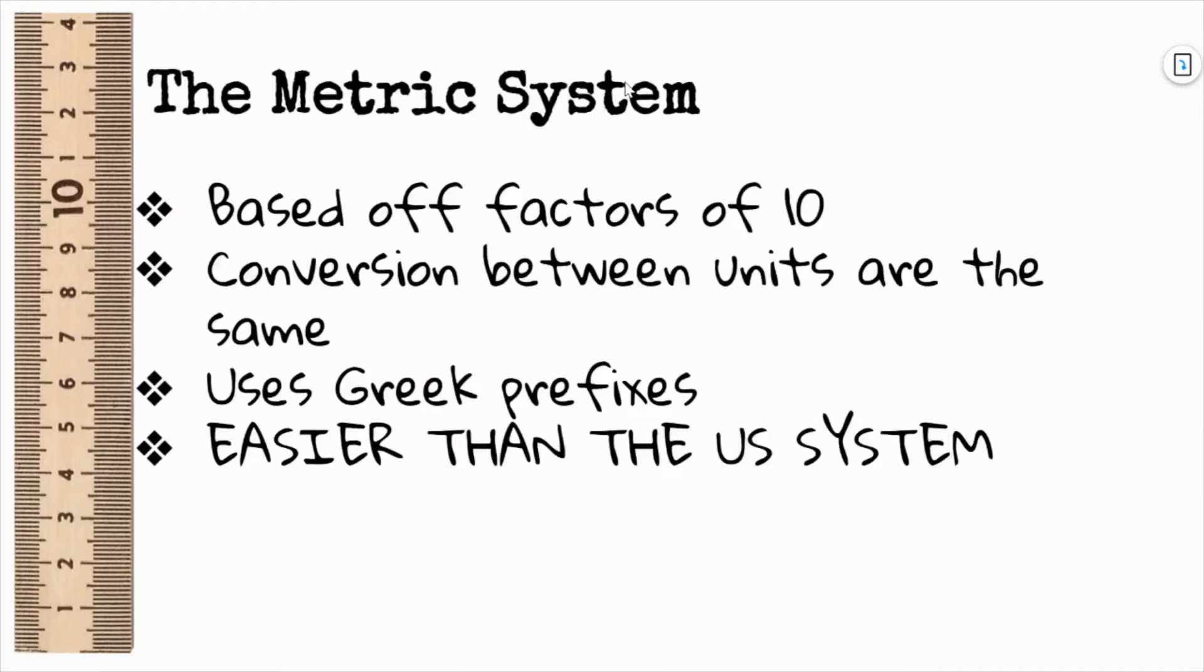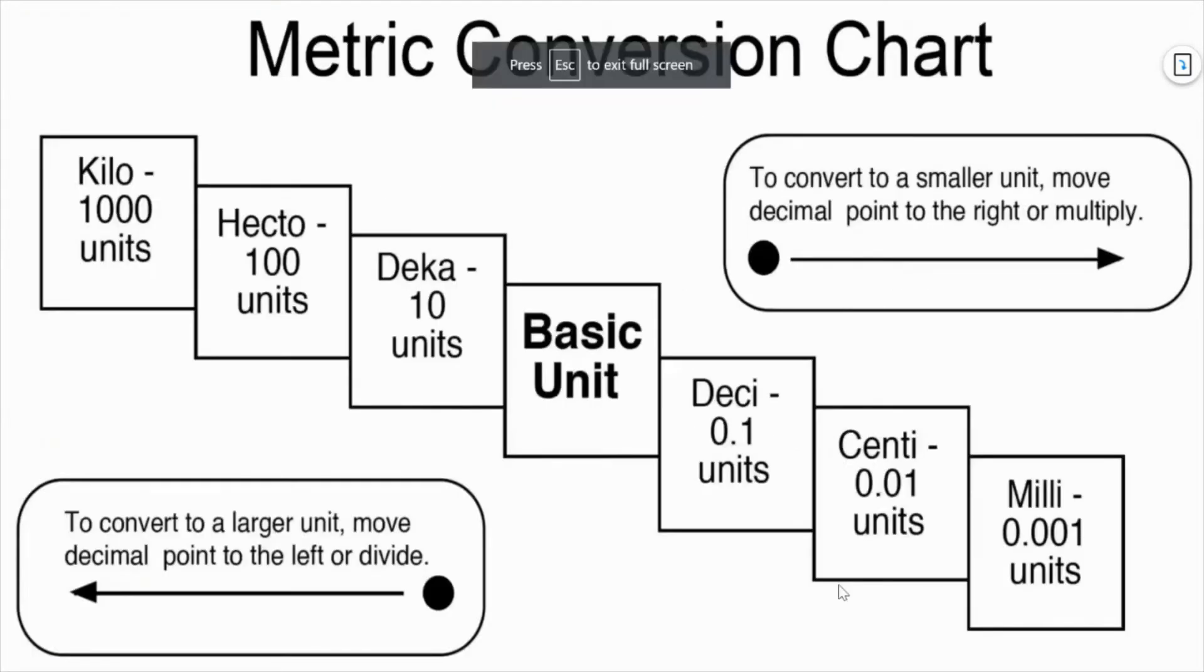This is a really cool thing about the metric system: it's based off of factors of 10. The conversions between units are the same, which makes converting pretty easy. Using Greek prefixes makes it uniform throughout, and it's easier to use than the US system when it comes to converting. You'll be thankful when we do conversions because the metric system makes a lot more sense than the English system we use here in the US.